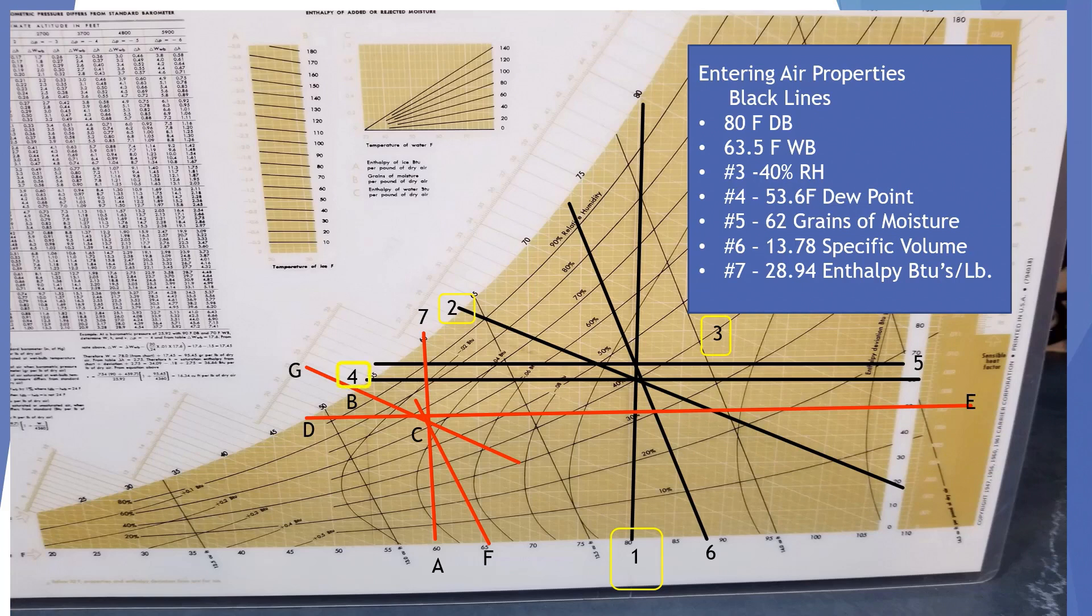At number 4, we have 53.6 degrees of dew point. At 5, we have 62 grains of moisture. At number 6, we have 13.78 specific volume of the air. At number 7, we have 28.94 enthalpy of BTUs per pound of air.